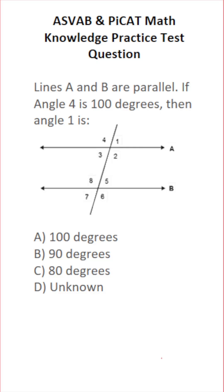This math knowledge practice test question for the ASVAB and PICAT says lines A and B are parallel. If angle 4 is 100 degrees, then angle 1 is.